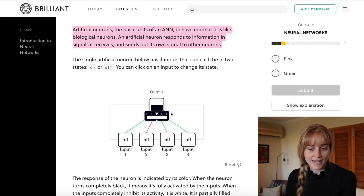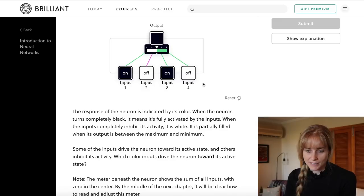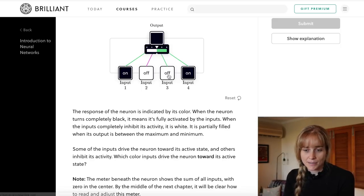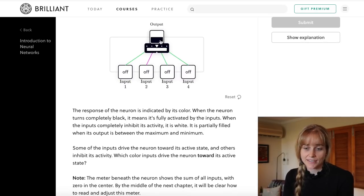We have one artificial neuron down here with four inputs and each of these inputs can either be on or off. When the neuron is completely colored in black like it is now, that means it is fully activated by the inputs. If it was fully white that means its activity is inhibited, and if it's some mixture in between maybe something like this halfway, then it is just partially activated.